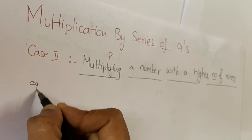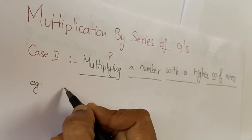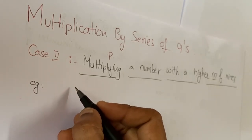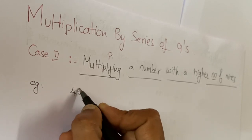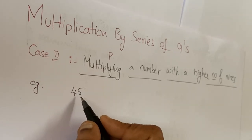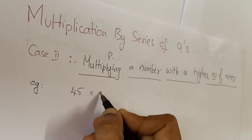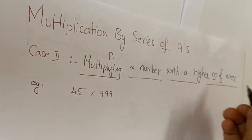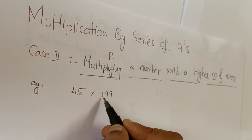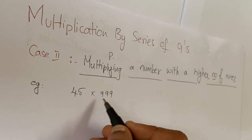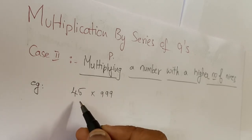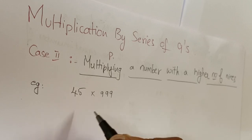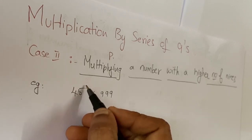Here we are taking 45, which is a two-digit number, and we are multiplying it with a higher number of nines. The number of nines is three, so this is a three-digit number and this is a two-digit number. In that case, we have to make this multiplicand a three-digit number.